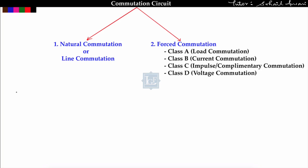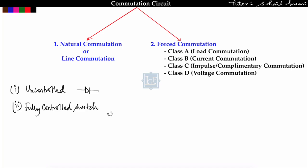In the power electronics introduction video, I divided the switches — the classification of switches on the basis of controlling — into three categories. First is the uncontrolled switch: those switches in which the turn-on and turn-off state cannot be controlled; it depends upon the supply. Example is a diode. Second is the fully controlled switch, in which the on-state as well as off-state both can be controlled. Example: GTO, TRIAC, and transistor family like BJT, MOSFET, and IGBT.